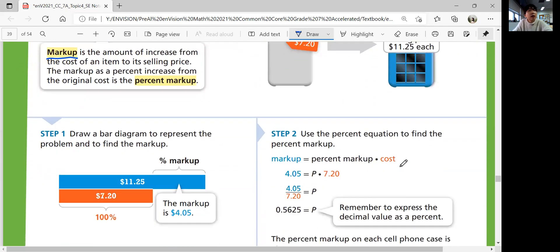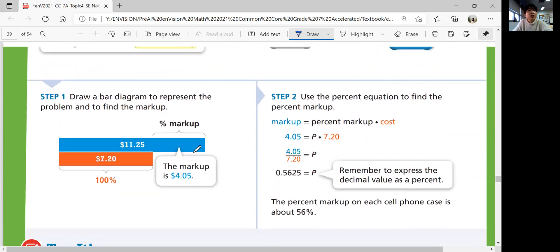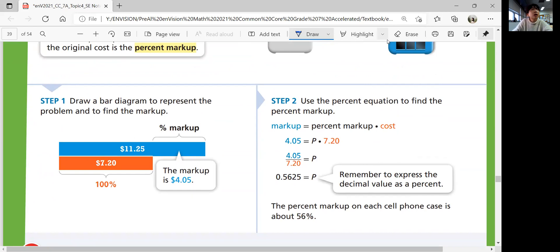Step one, draw a bar diagram to represent which one is the whole, which one is the markup price. From $7.20 to $11.25, you mark up $4.05. So what is the percentage? This is the part and that's the whole. So what's the percent of the part in terms of the whole? You use the percent equation. Part is equal to percent times whole.